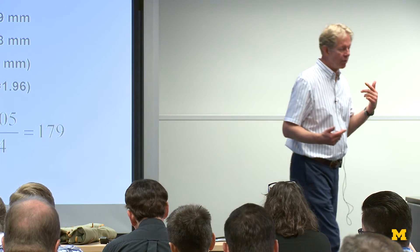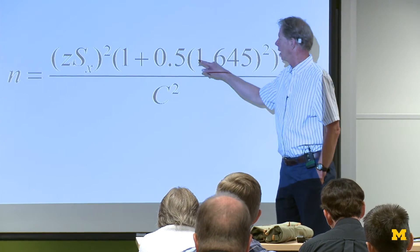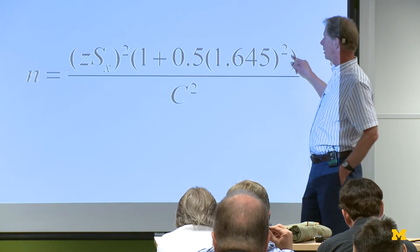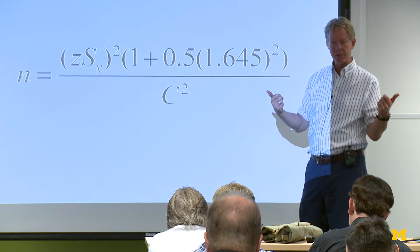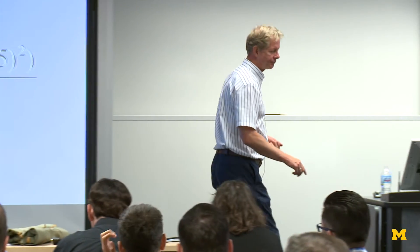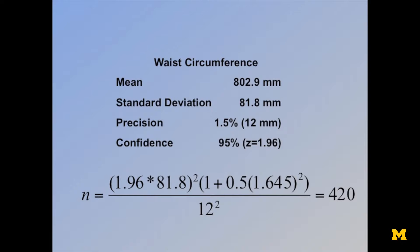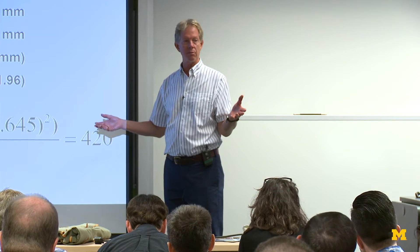We can figure that out mathematically, and it turns out there is basically a correction factor that gets us that same level of confidence at the 5th and 95th percentiles. The input elements are the same, so it is essentially a constant. If we do the same exercise, we get 420. The point is we have to measure more people if we want to understand the tails of the distribution, which makes more sense.